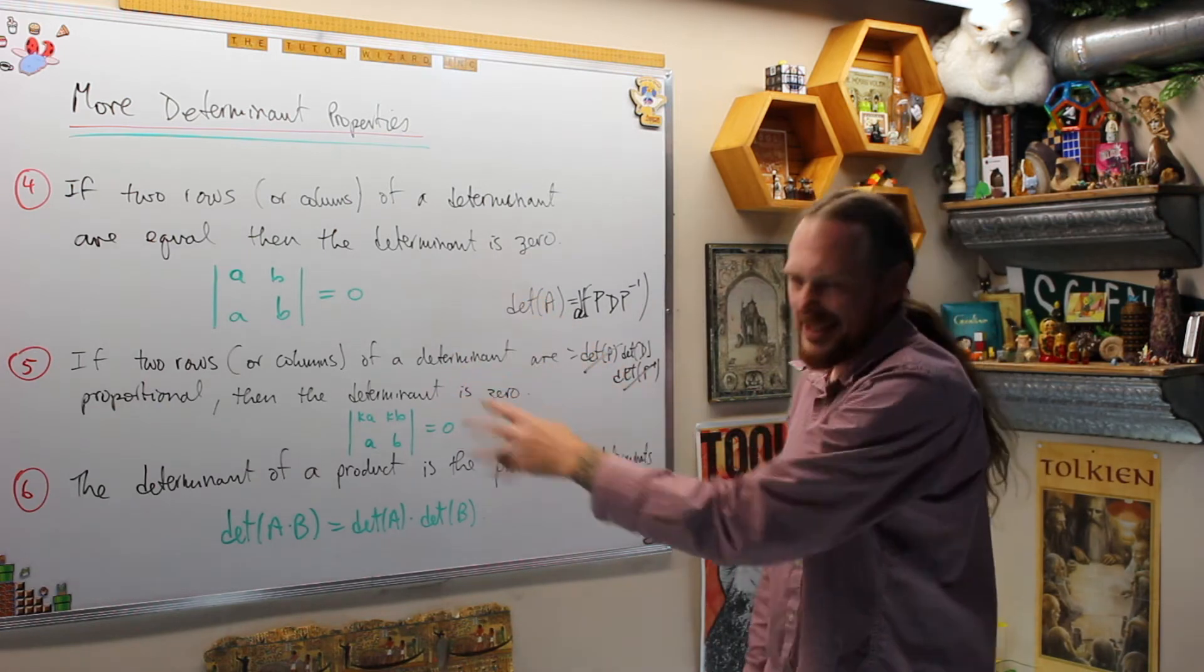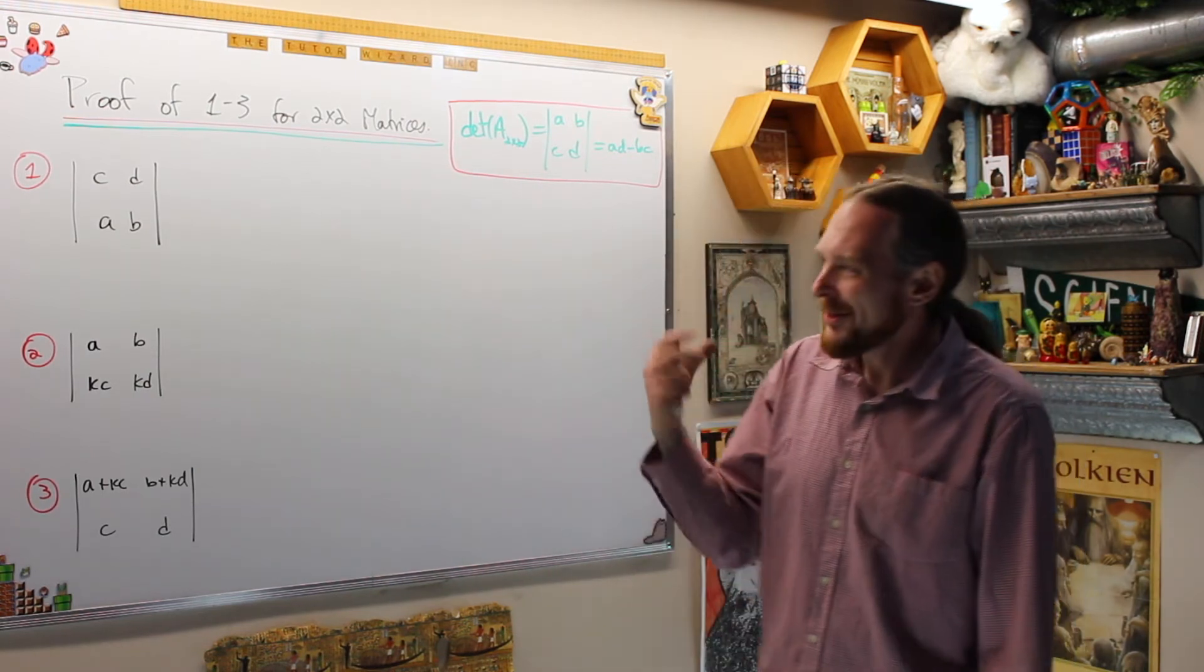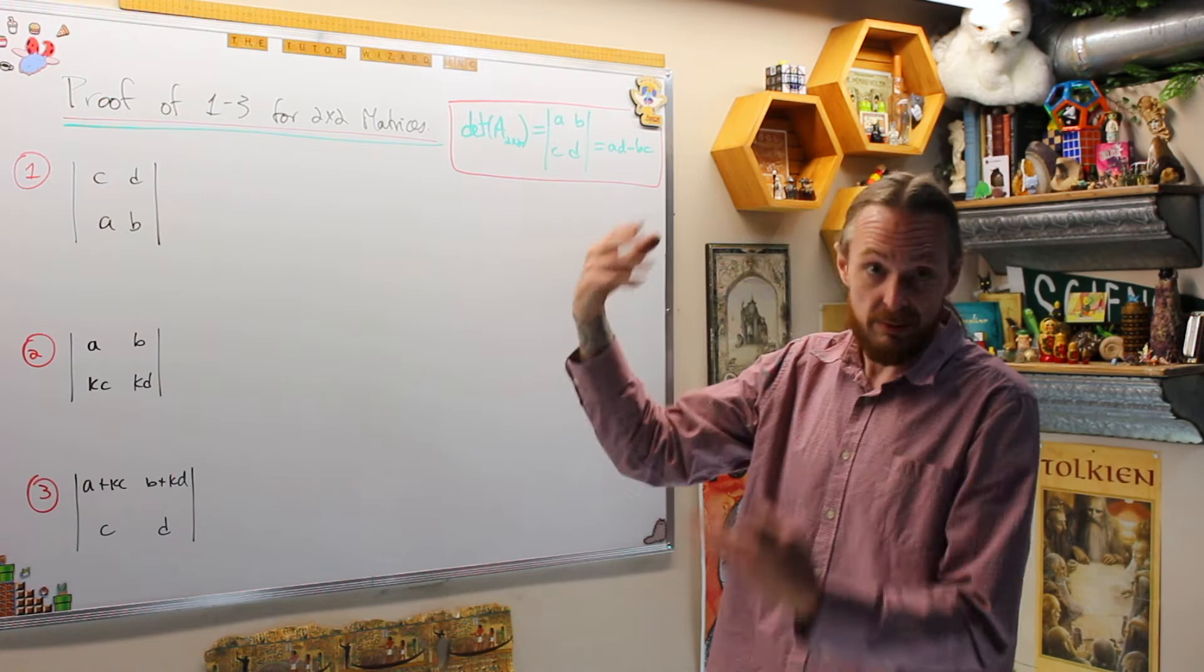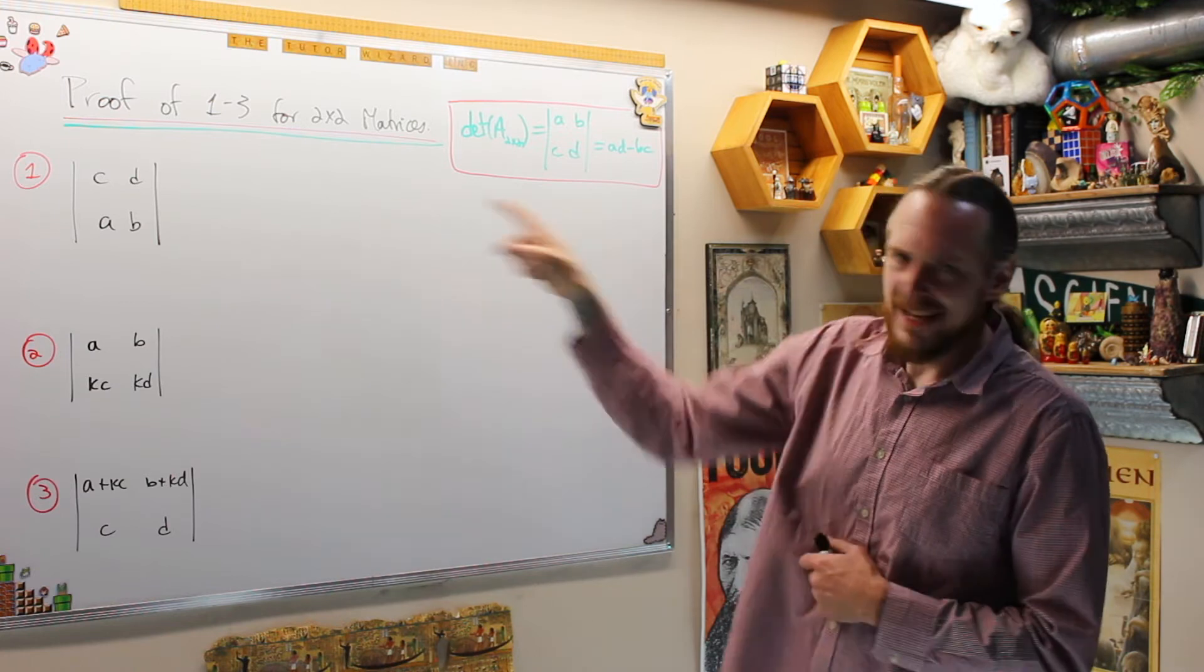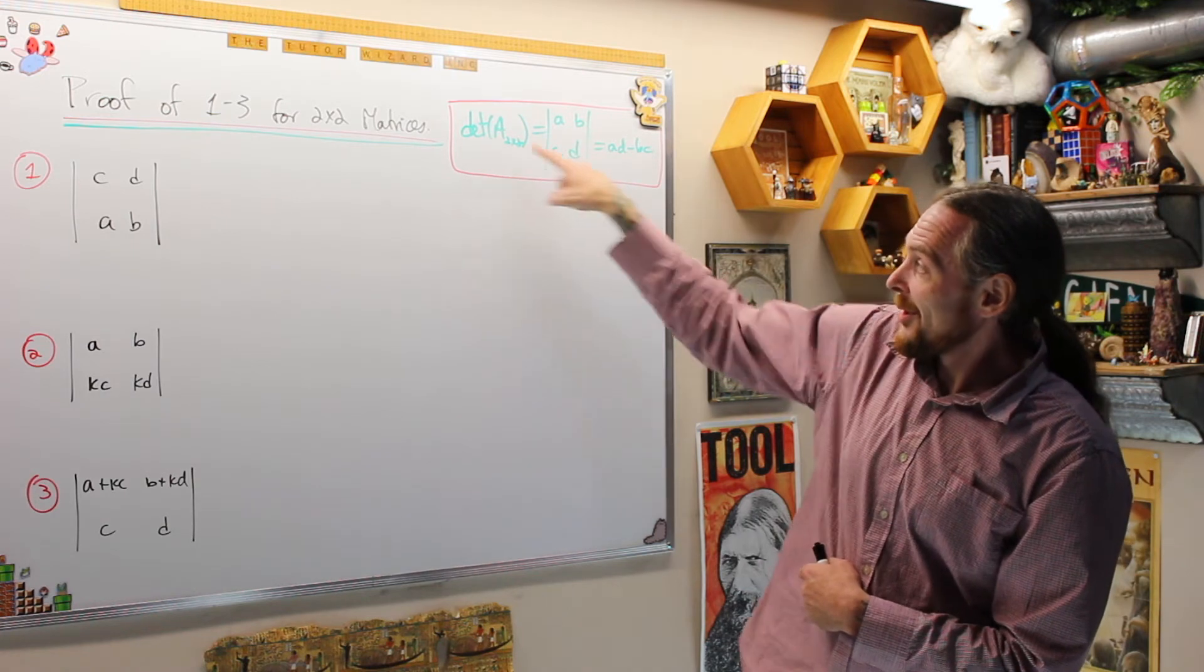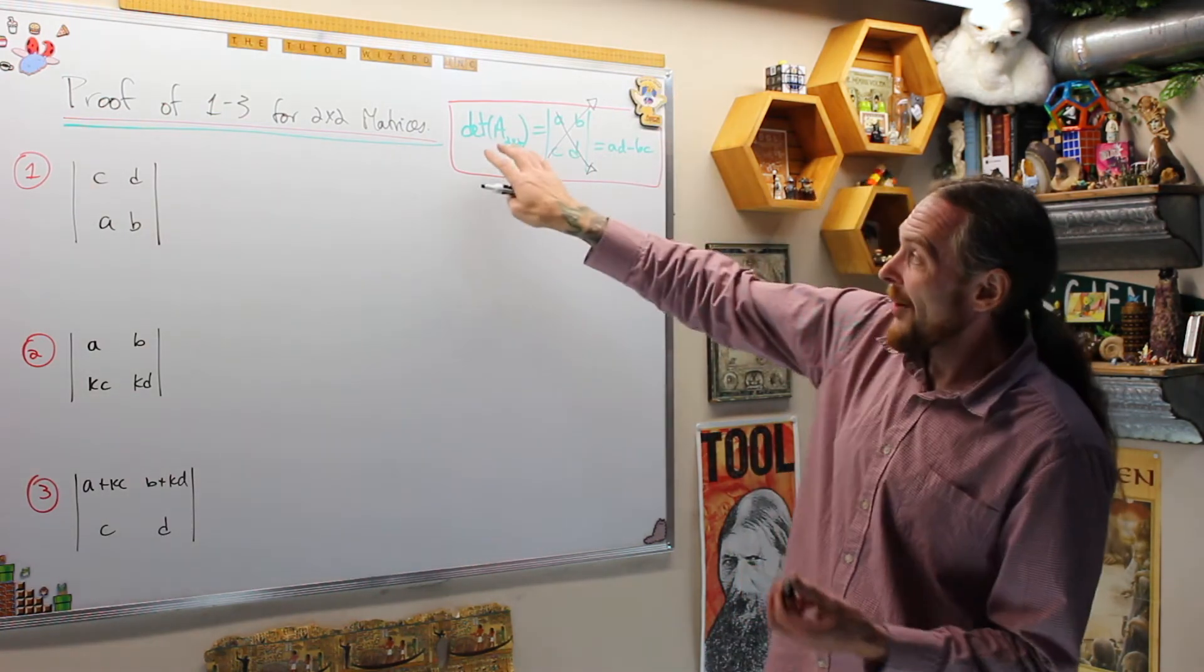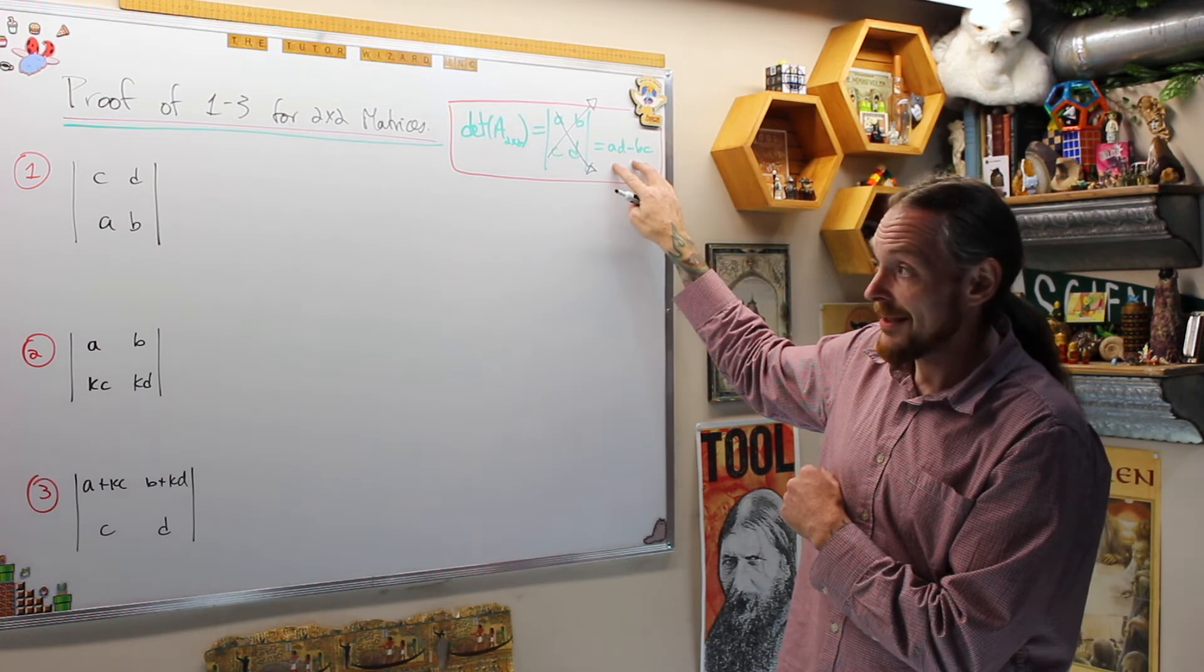Let's look at proving some of these properties for two by two matrices. Let's prove one to three for a couple versions of two by two matrices so you can actually see and convince yourself. Here's what a two by two matrix looks like. Here's what the determinant is. It is A D minus B C. It is the main diagonals multiplied together minus the off diagonals. Therefore, I already know the determinant of A is A D minus B C.